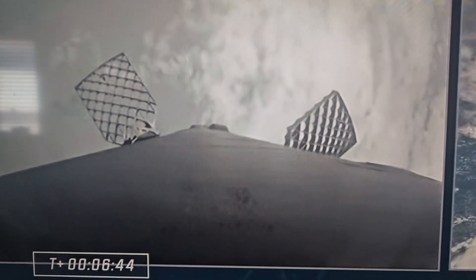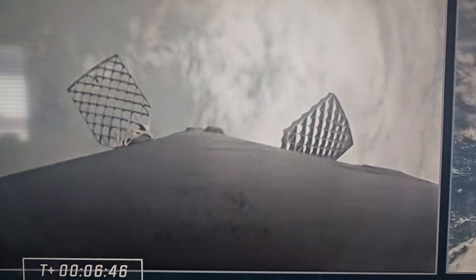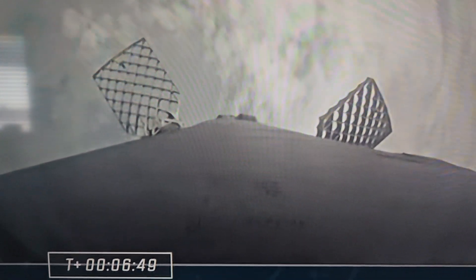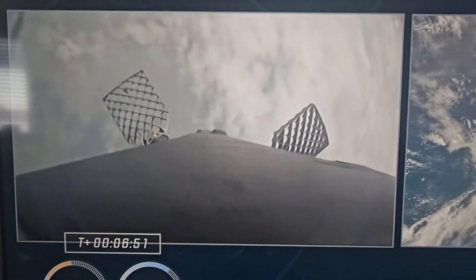burns on its way back to Earth. The first is the boost back burn followed shortly thereafter by the entry burn. The entry burn is used by Falcon 9 to slow the vehicle down before it reaches the denser parts of the Earth's atmosphere.